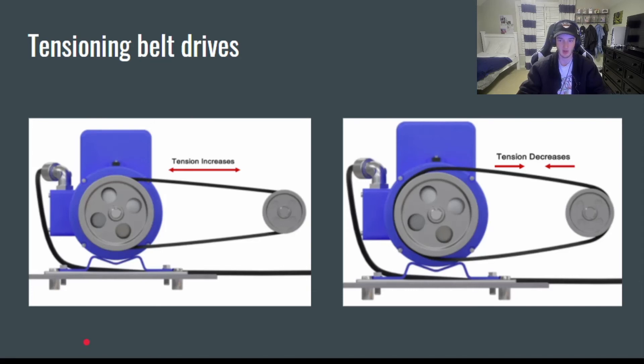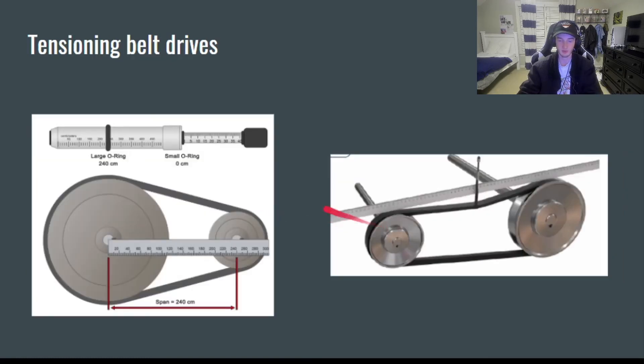For tensioning belt drives, it's a little bit different from chain drives, but this principle is the same between both of them. Obviously, if you move the sheaves or sprockets further apart, the tension is going to increase on your belt or chain. And if you move them closer together, it's going to decrease.